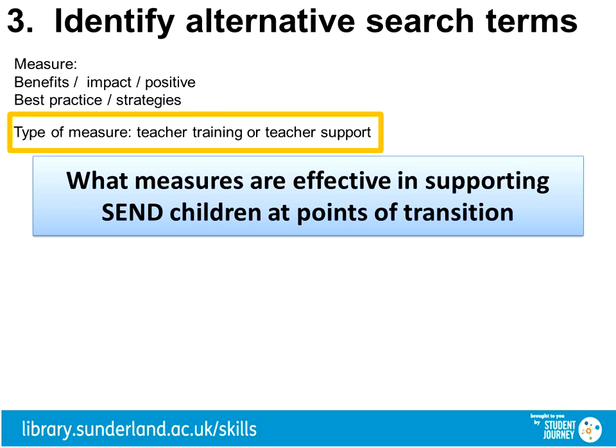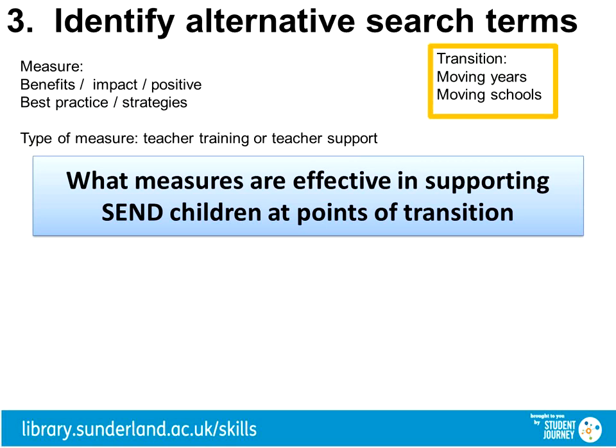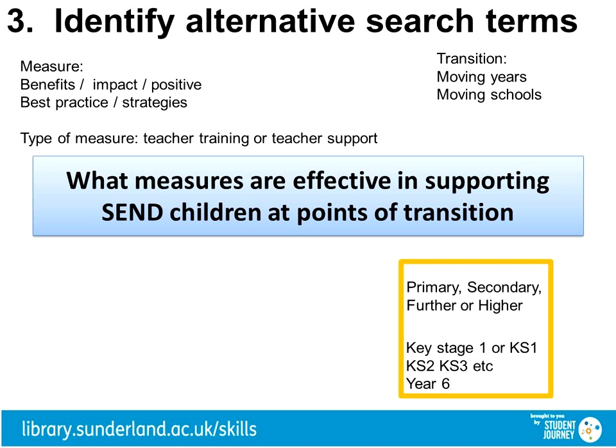We have taken the type of measure — teacher training — and thought of teacher support also. Transition is a well-known term, but we could also describe it as moving years or moving schools. When we were looking at scope, we were considering which level of schooling. So for secondary school, we might also say high school or secondary education, year six to year seven, or use key stages. Different articles will describe their transition differently, so it's worth trying a few alternatives.